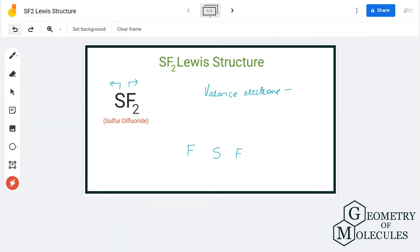Hi guys, today in this video we are going to look at the Lewis structure for SF2 molecule. It's the chemical formula for sulfur difluoride, made up of one sulfur atom and two fluorine atoms.